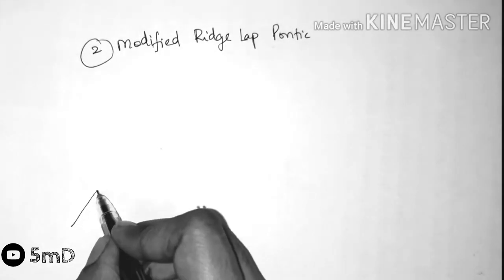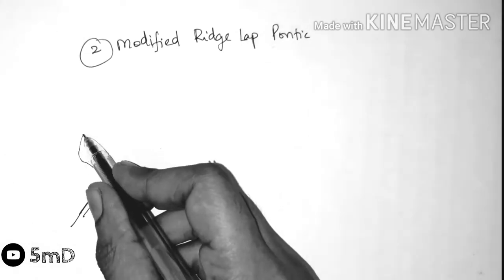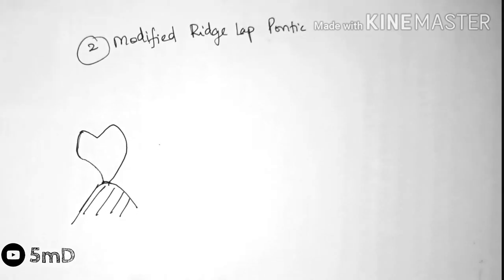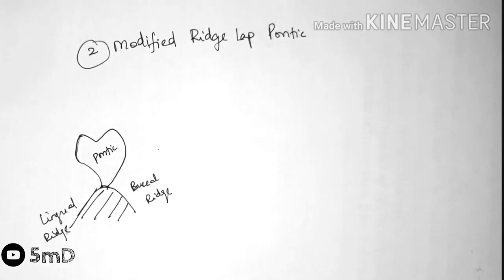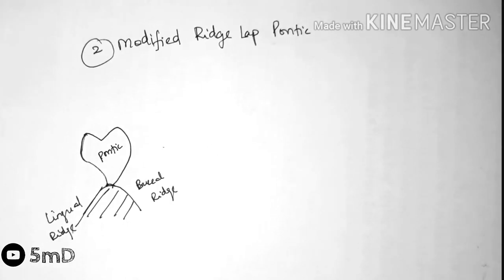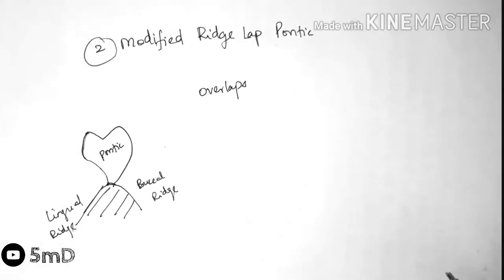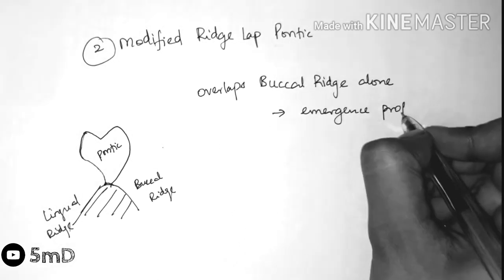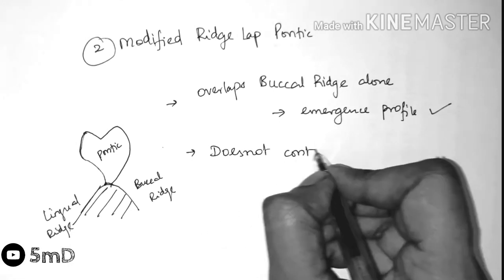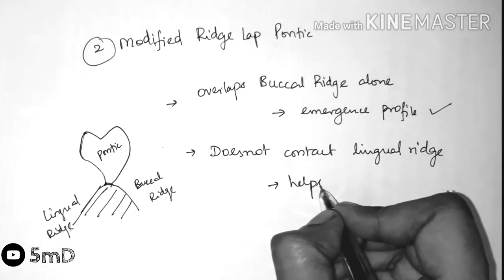In modified ridge lap pontic, there is only the overlap of ridge on one side, which is usually the buccal ridge to imitate the emergence profile to some extent. On the lingual ridge there is no contact between the pontic and the ridge to facilitate the cleaning and the hygienic maintenance of the pontic.